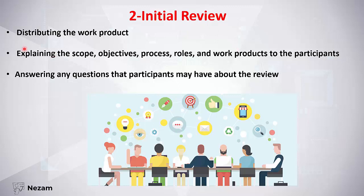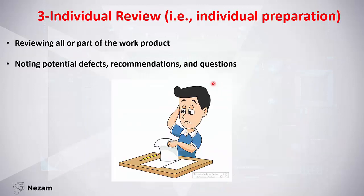The second step is initial review. Here we distribute the work product to the reviewers and explain the scope, objectives, process, roles, and work product to the participants — for example, by sending them an email explaining all these things and telling each person their role. We answer any questions they have about the review.